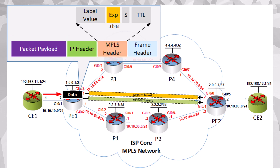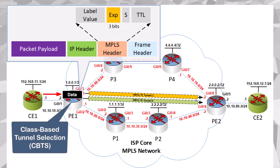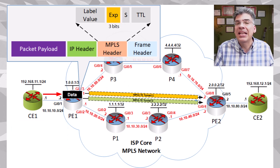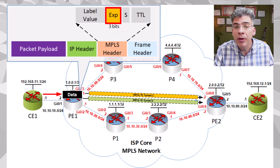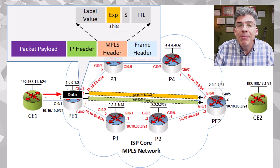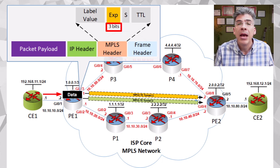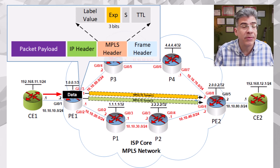When it does so, it includes the EXP field we see here in the MPLS header. CBTS will examine that EXP value to decide which tunnel will be used to forward the traffic. EXP is a field within the MPLS header that is used for the purpose of quality of service. It's a 3-bit value, so it ranges from 0 to 7 in decimal. By default, the value is 0, but you can use various QoS mechanisms to change this.